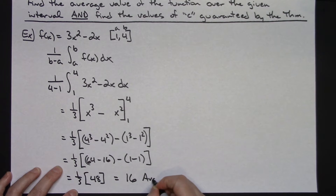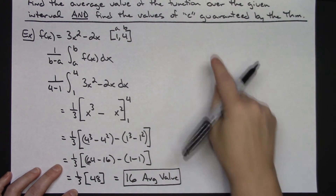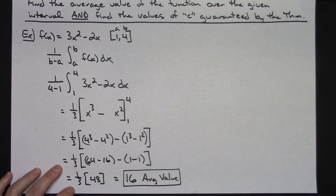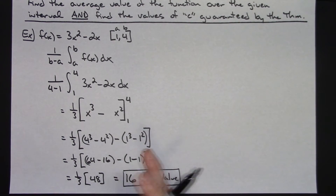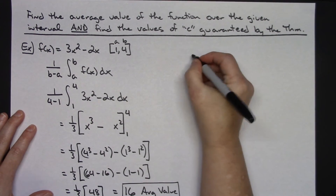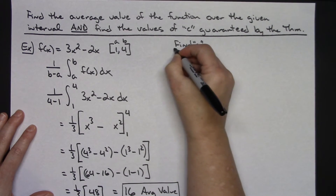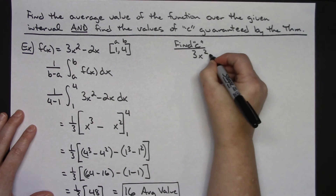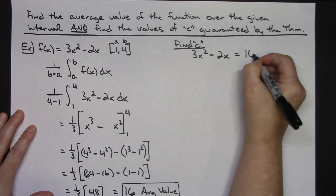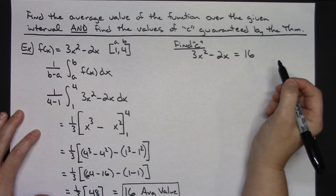One-third times 48 gives me an average value of 16. So that is my average value. Now it says to find the values of c guaranteed by the theorem. What I'm going to have to do is take this average value, set it equal to my function, and find the values guaranteed by the theorem. So I'm going to take my function, which is 3x squared minus 2x, and set it equal to my average value of 16. Solving this quadratic, I'll move 16 to the left.